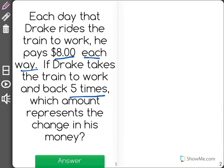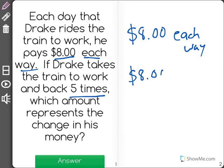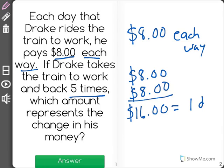Now here's what we need to know. First of all, we need to know that it's $8 each way. So that means that it's $8 to go to work and $8 to come home from work, and that represents one day. So $16 is how much he pays for one day of taking the train to work.